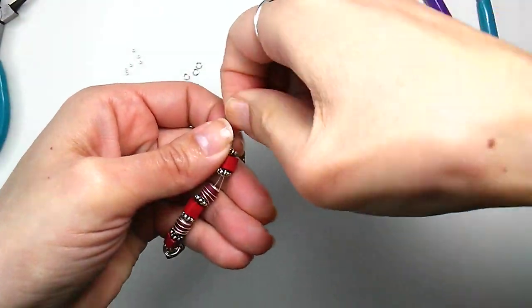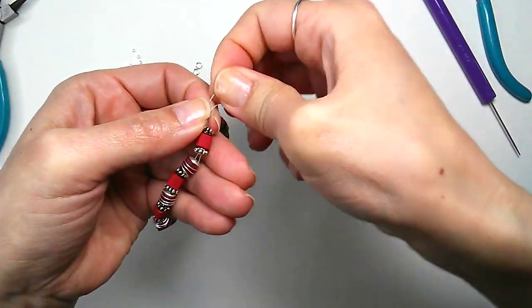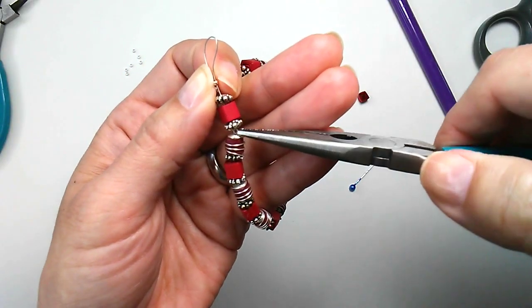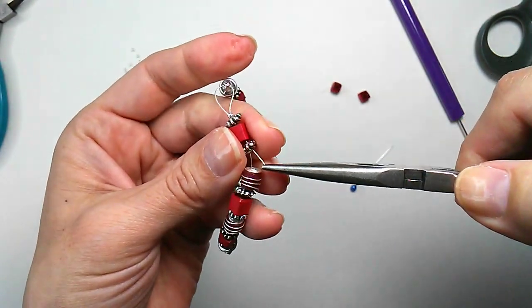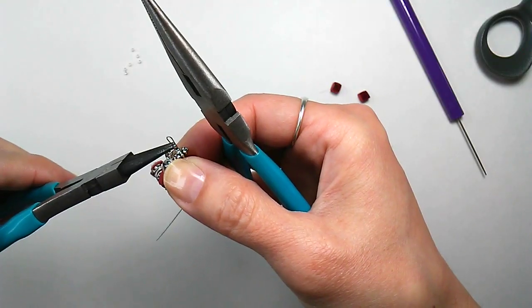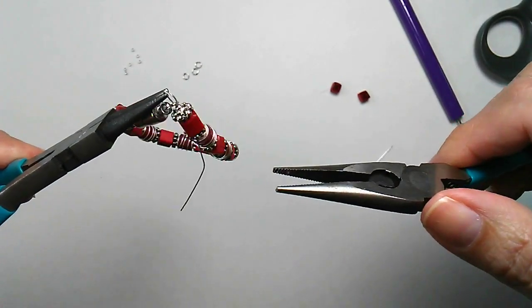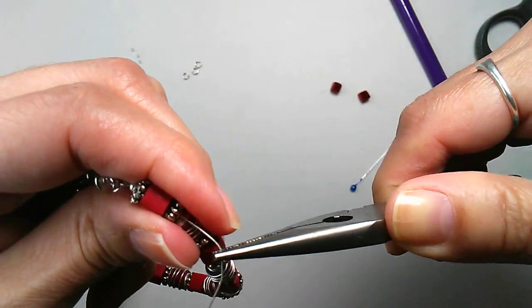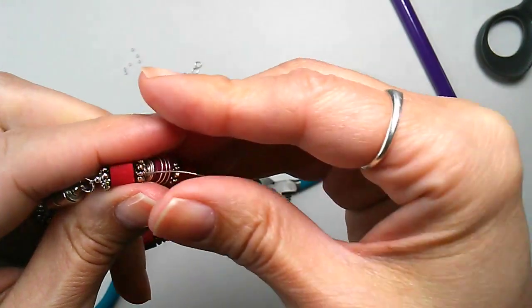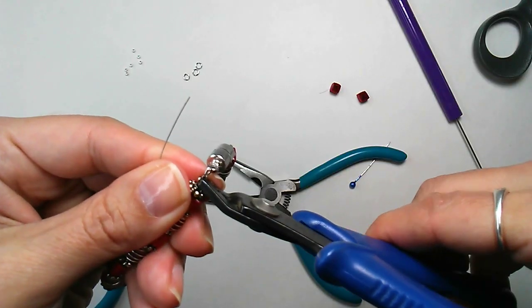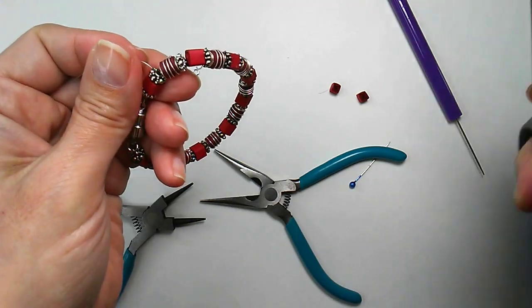Now we're almost done, but we want to make sure to pull the wire tight so the beads are touching and there's no wire showing in between. Once it's tight, we can squish the crimp bead and cut the extra wire.